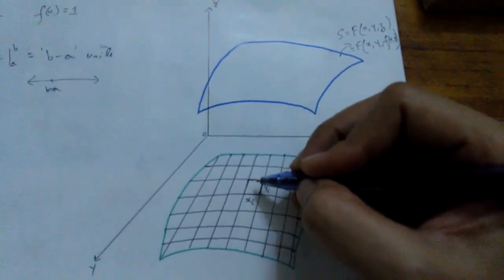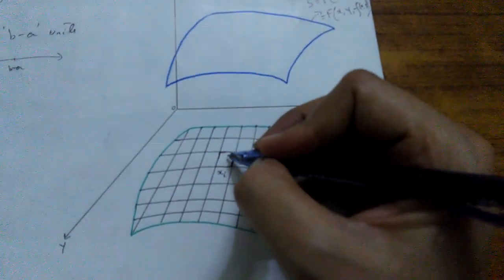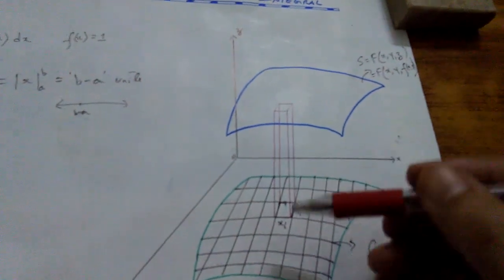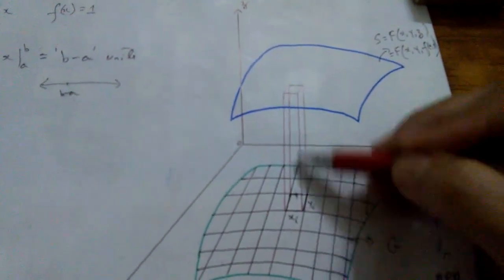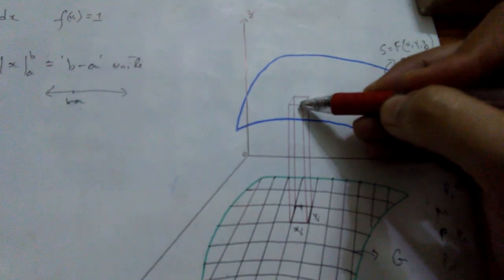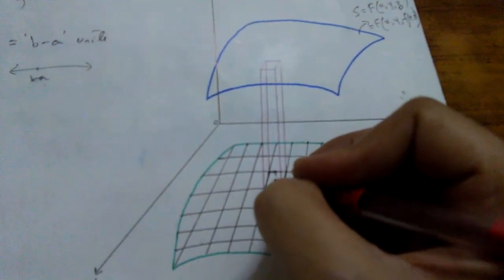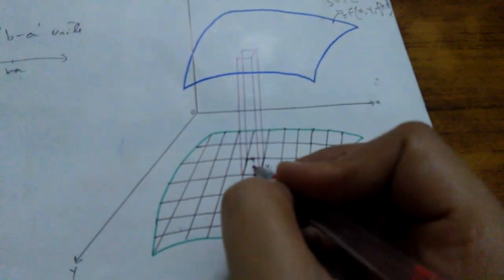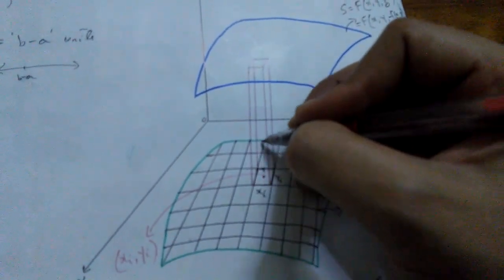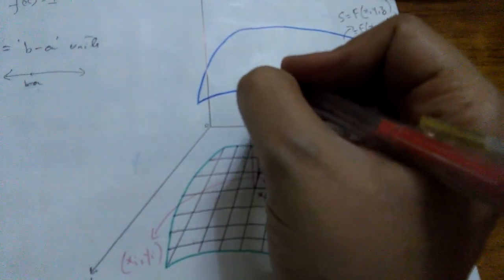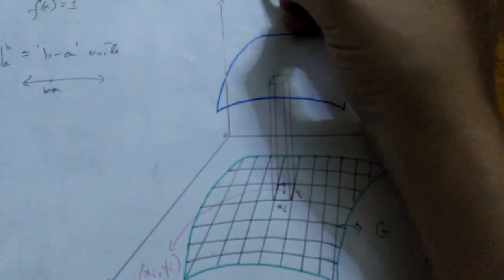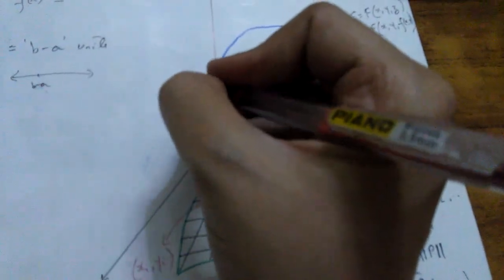Now I develop a parallelepiped from this base — with respect to this partition — and it is bounded by the surface. This is the parallelepiped having this partition as a base, raised up to the surface. If this is a point having coordinates (x-sub-i, y-sub-i), then the corresponding z coordinate is traced on the surface, and the z coordinate actually represents this bivariate function f(x-sub-i, y-sub-i).